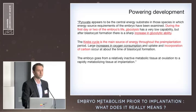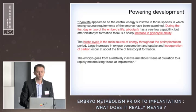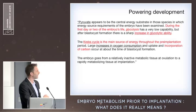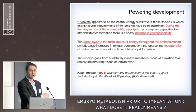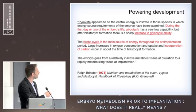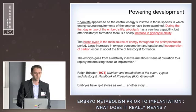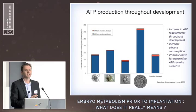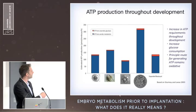We can summarize the metabolic life course of an embryo: pyruvate appears to be the central energy substrate during the first day or two; glycolysis is fairly low, and the Krebs cycle — oxidative metabolism — is the dominant pathway. The embryo goes from a relatively inactive metabolic tissue to a rapidly metabolizing tissue. That was written in 1973 by Ralph Brinster, and everything we've done since then has essentially confirmed this early description. One thing to mention: we are increasingly aware of the important role of fat or triglyceride in the early embryo.